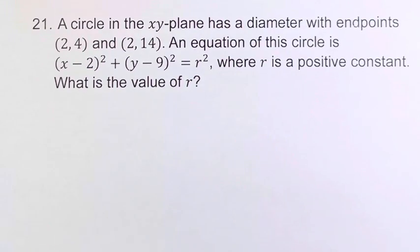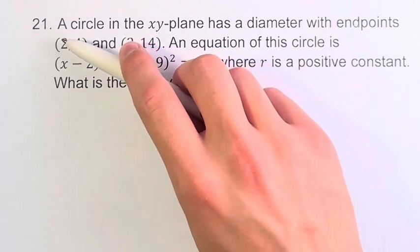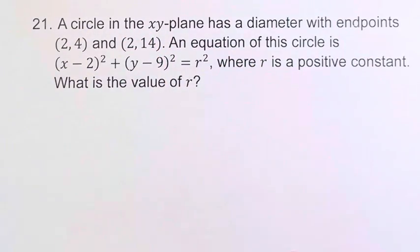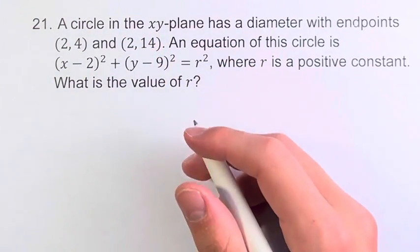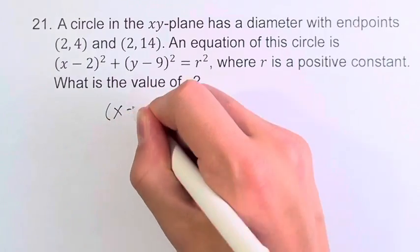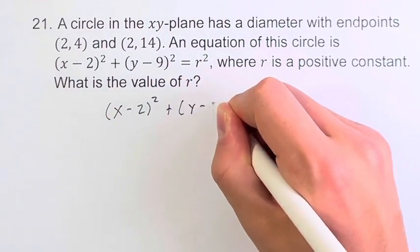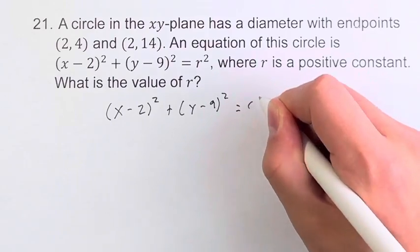The simplest way to do this is not worry about actually coming up with the equation of the circle but instead plugging in one of these points into our equation. Just writing down the equation here: (x-2)² + (y-9)² = r².